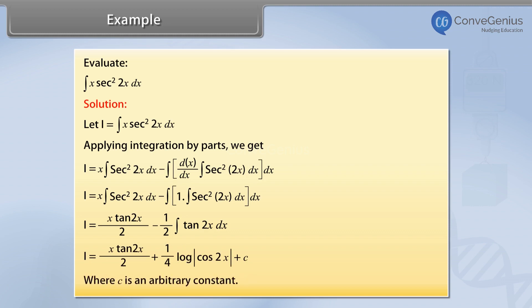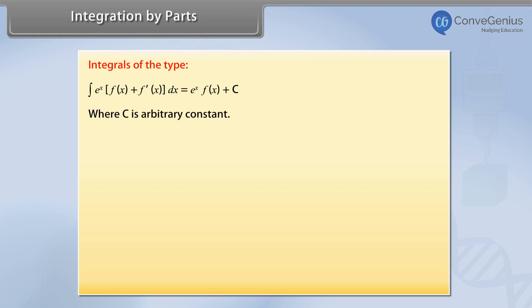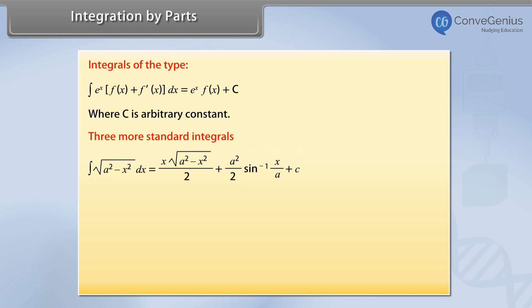Plus c, where c is an arbitrary constant. Integration by parts formula: the integral of x·√(a²−x²) is equal to (x/2)·√(a²−x²) plus (a²/2)·sin⁻¹(x/a) plus c.